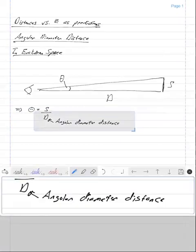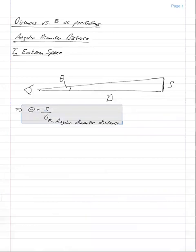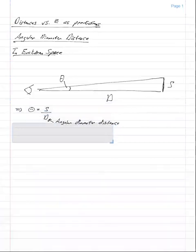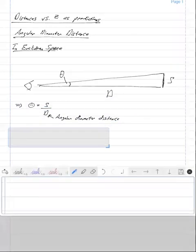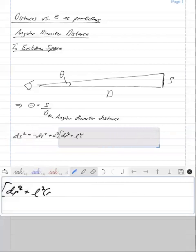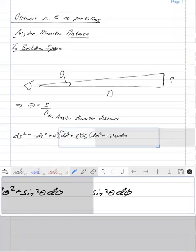This is what we mean by the angular diameter distance. It is the distance that you put in the denominator that gives you the angle of how this thing appears on the sky. So in the Robertson-Walker metric, let's go ahead and write down the interval for the Robertson-Walker metric. ds squared is equal to minus dt squared plus a squared dr squared plus l squared of r and then d theta squared plus sine squared theta d phi squared.